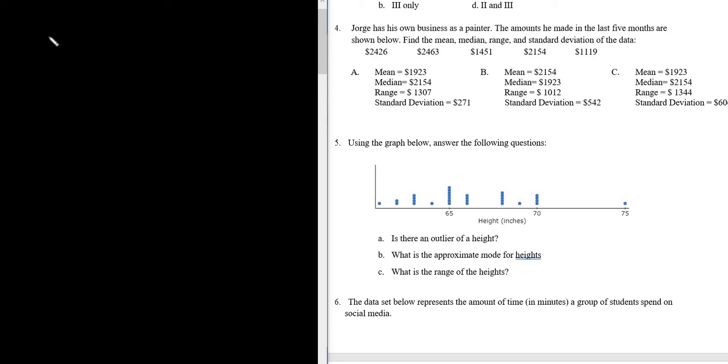So part A, is there an outlier of a height? So let's go ahead and work that out. An outlier is a number in a data set that is very far away from the other numbers. So in this case, 75 is very far from the other numbers.